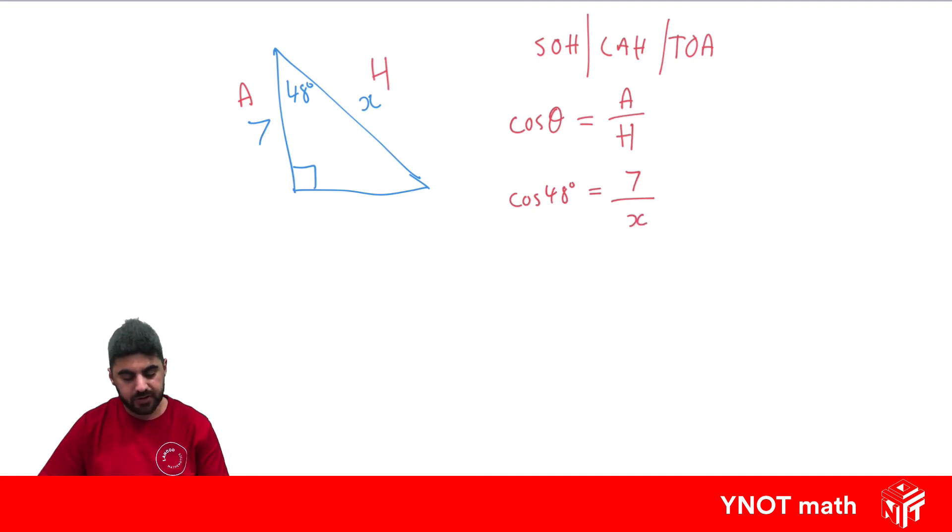Well, this is a little bit different because this time we have the pronumeral in the denominator. And there's a few ways we could go about this. We could multiply both sides by x. So the x's cancel out. So we have x cos 48 equals 7. Then we could divide both sides by cos 48. And the cos 48's cancel. So x equals 7 over cos 48. We could use our calculator here. Then we get 10.46, correct to two decimal places.